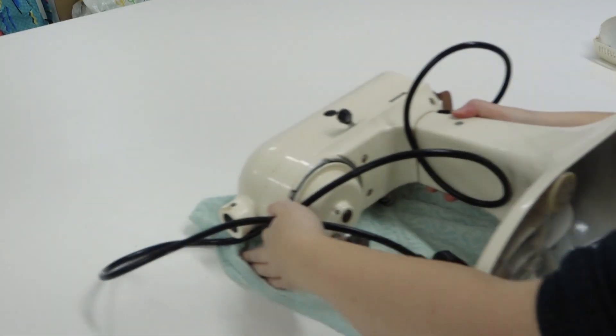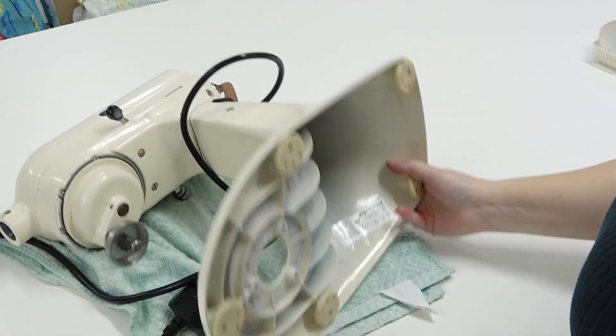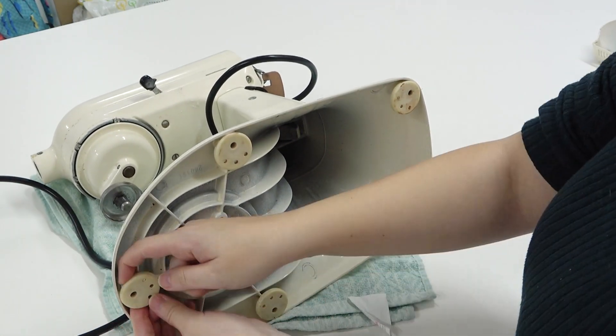I'm now laying the machine down on a tea towel so it doesn't scratch the surface, and we're going to remove these rubber feet. These should just pop straight off.